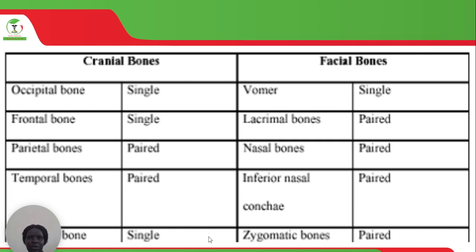The facial bones also include both single and paired bones. The single facial bone is the mandible. The paired ones are the lacrimal bones, nasal bones, inferior nasal concha, and zygomatic bones. These ones are paired.